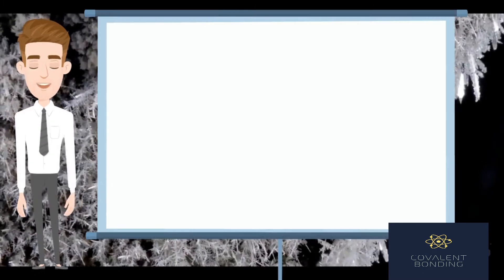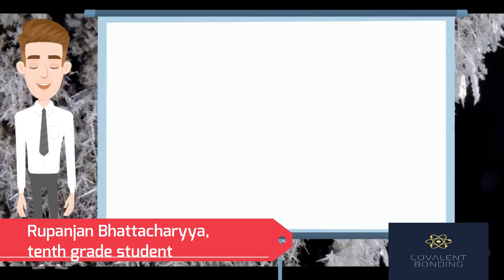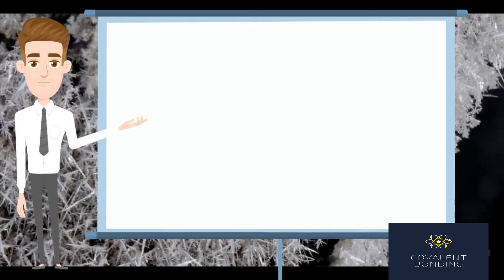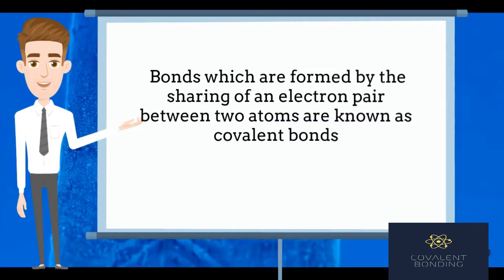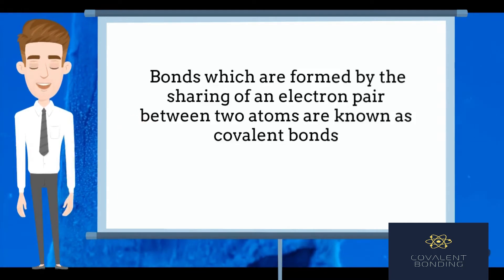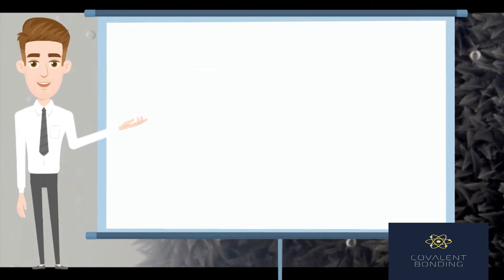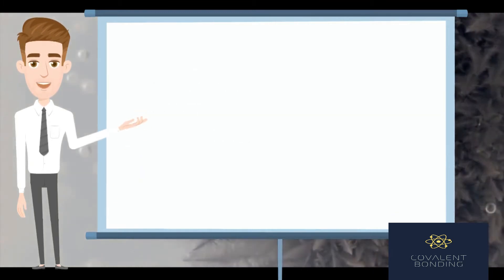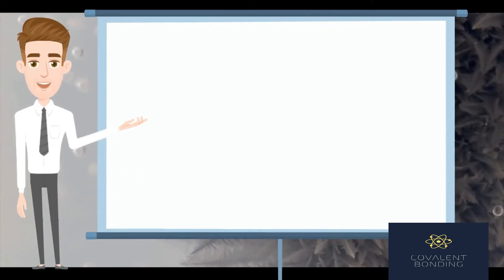Hi, I'm Rupanjan Bhattacharya. As a 10th grade student striving to elucidate the concept of covalent bonding: when elements do not differ much in their electronegativities, transfer of electrons is not possible between atoms. In this case, sharing of electrons takes place. Such bonds formed by the sharing of an electron pair between two atoms are known as covalent bonds.